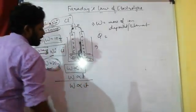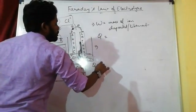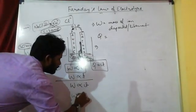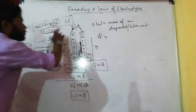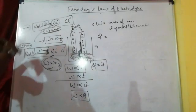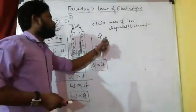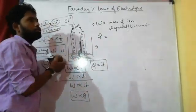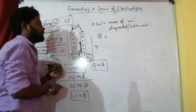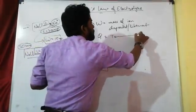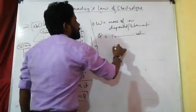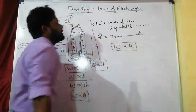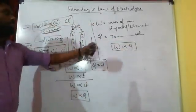Since W is proportional to I and W is proportional to t, we combine these as W proportional to I×t. From physics, Q = I×t, which is the charge or quantity of electricity. Q is the total charge passing in the solution. Therefore W is proportional to Q. This is Faraday's first law.